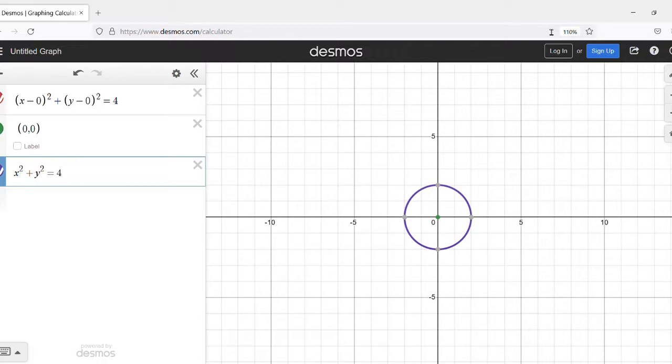So it could be also written as x² + y² equals 4. And look, it's drawn it right over top of it. And a lot of math books will start you with this. They'll start you with the x² + y² equals a number. And then they start throwing in the coordinates in the center.